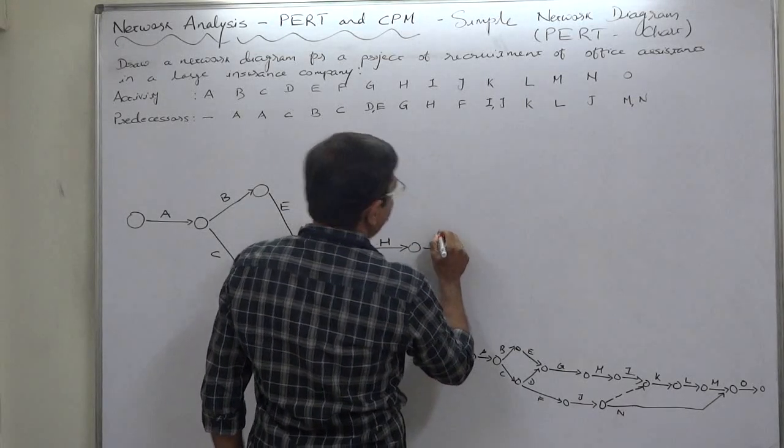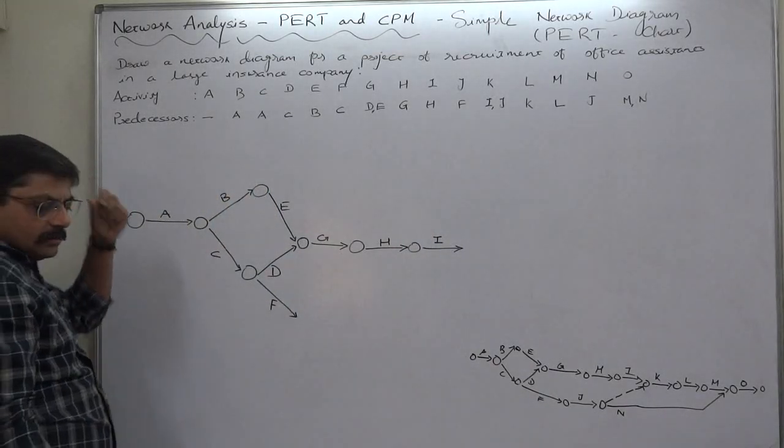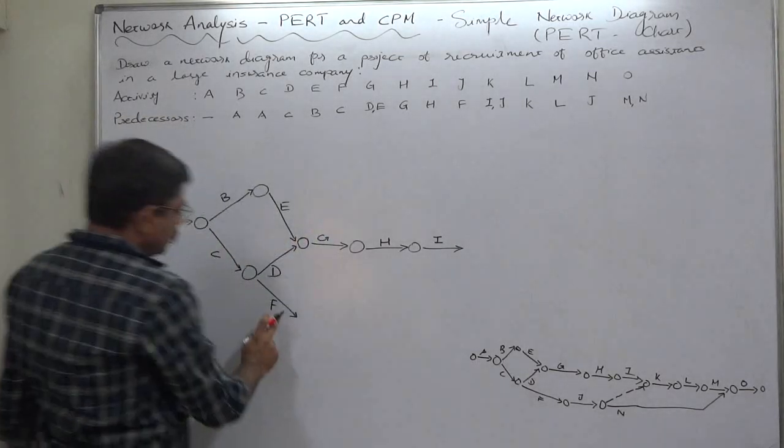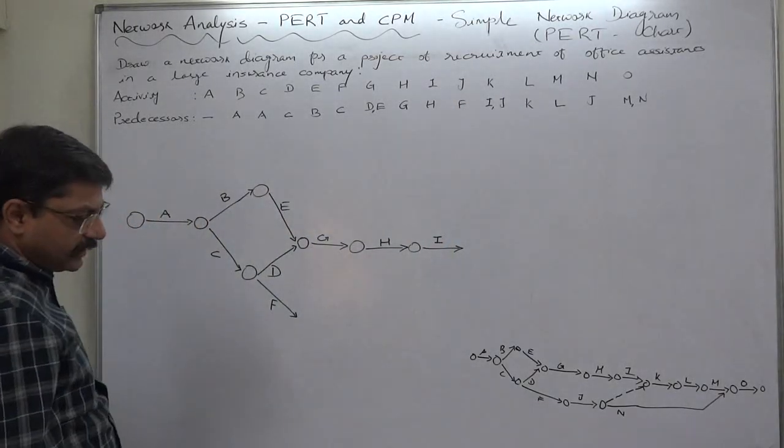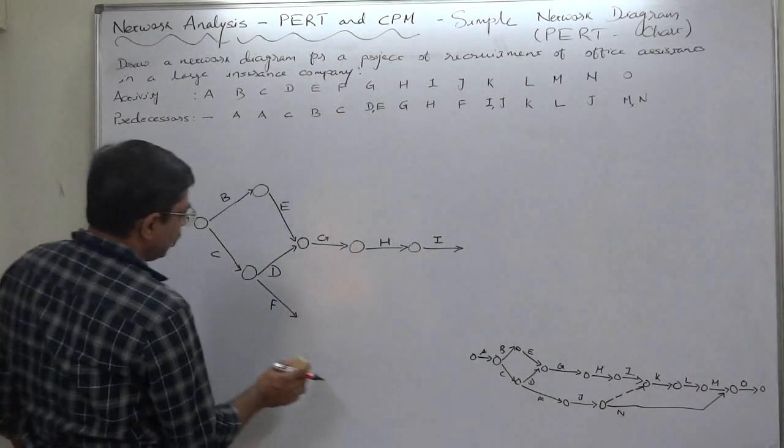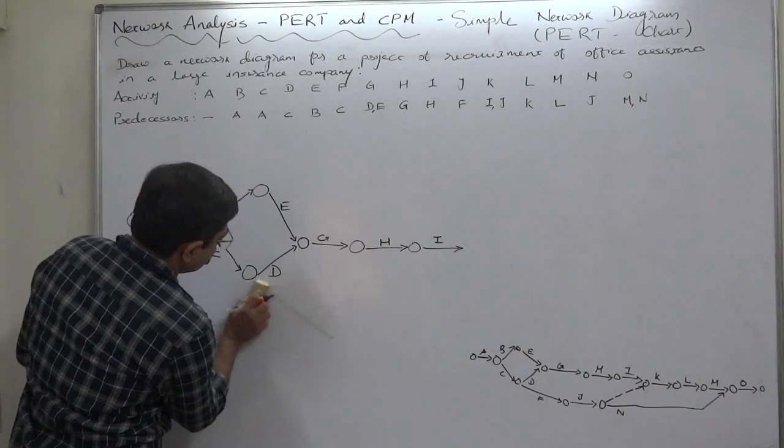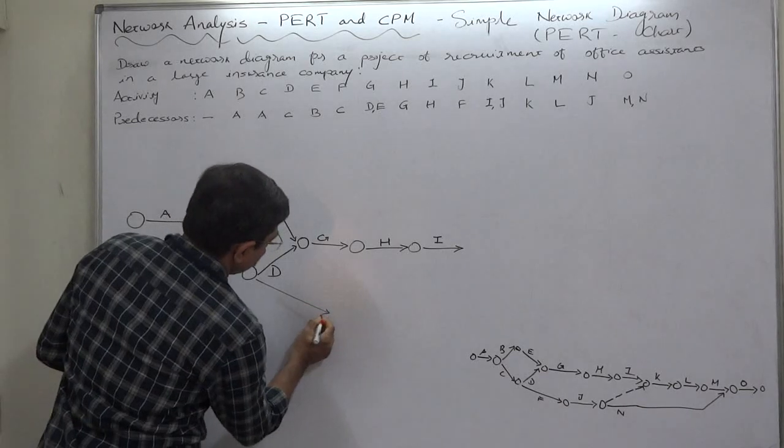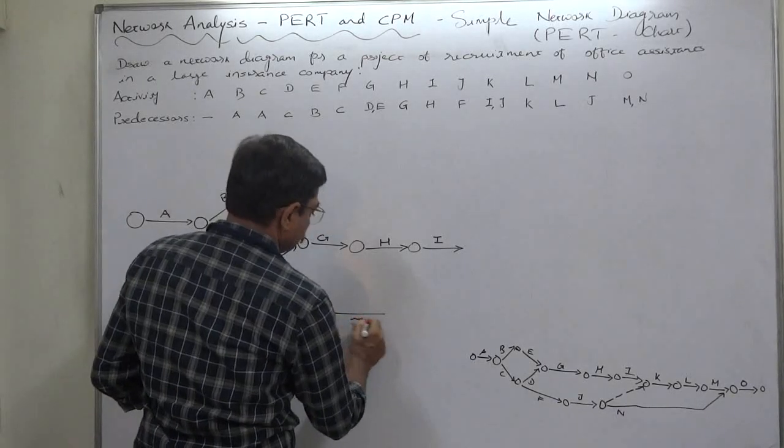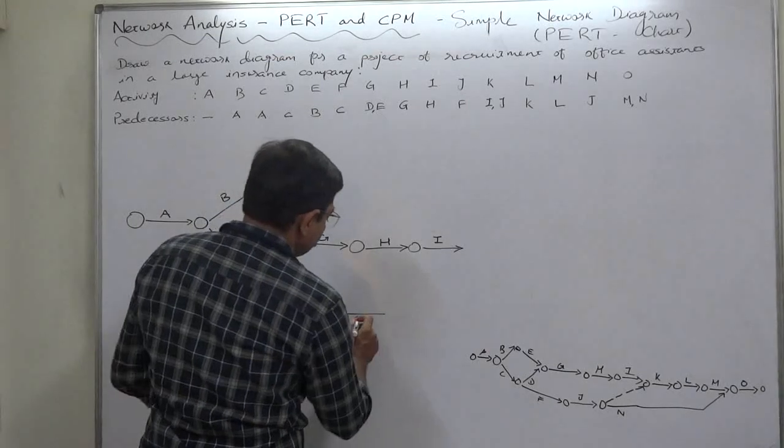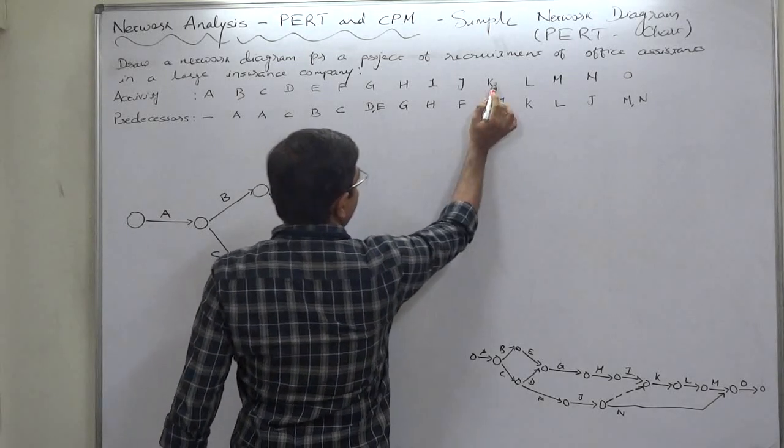Now I becomes predecessor of K together with J, so first we have to go for J. J starts after completing F, so let's show it in that way.